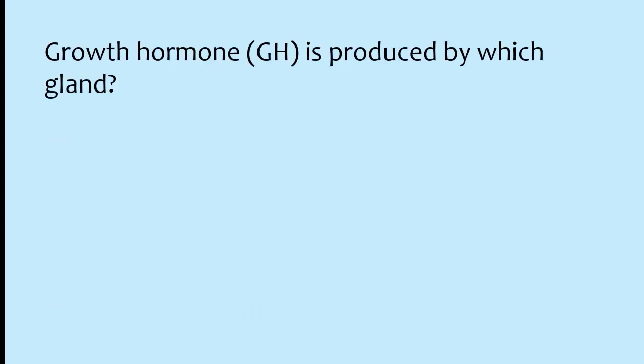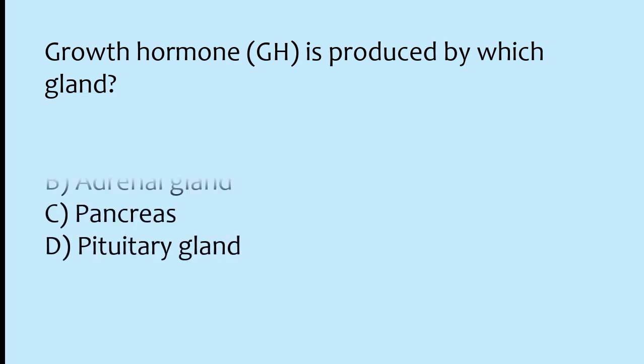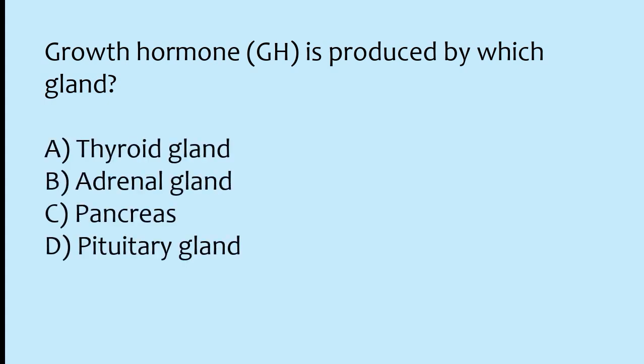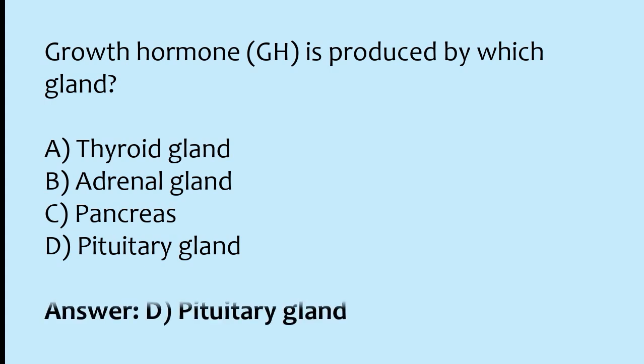Growth hormone is produced by which gland? Options: thyroid gland, adrenal gland, pancreas, pituitary gland. The correct answer is option D: growth hormone is produced by the pituitary gland.